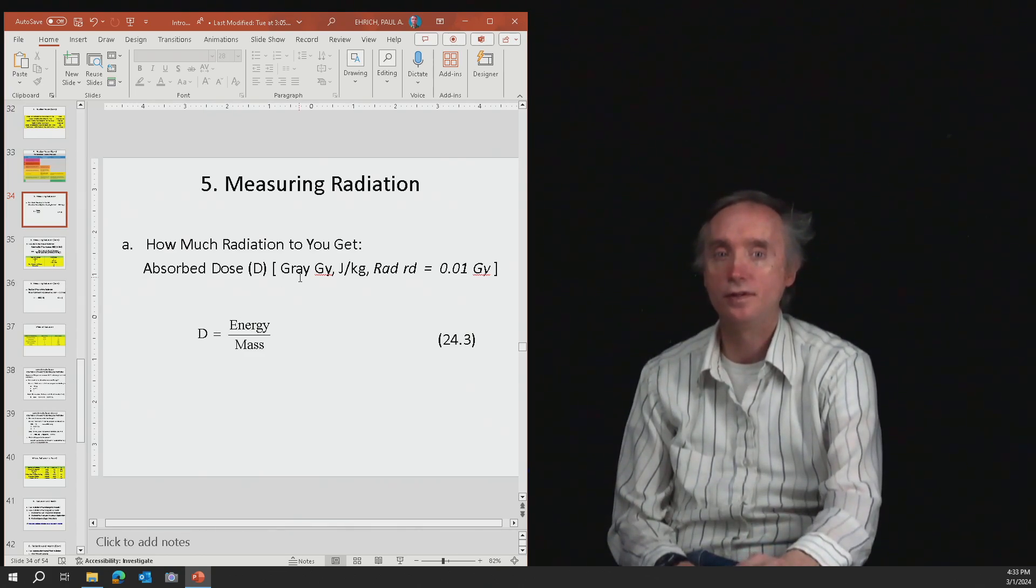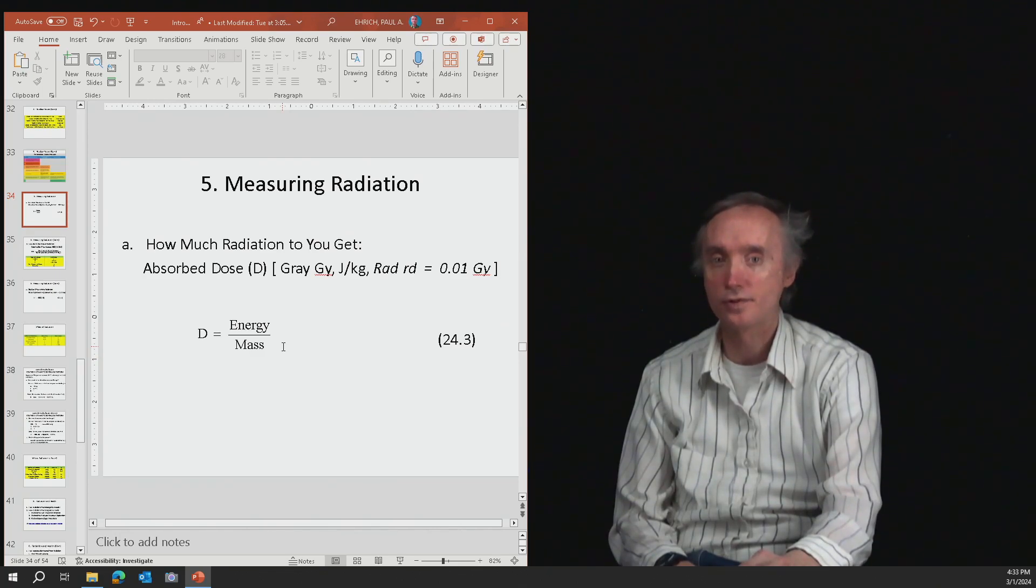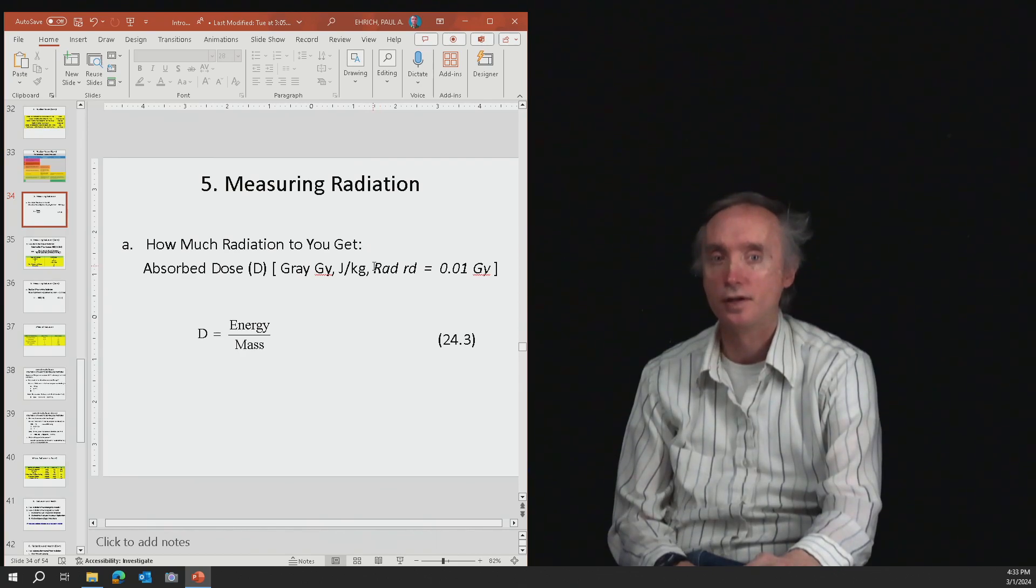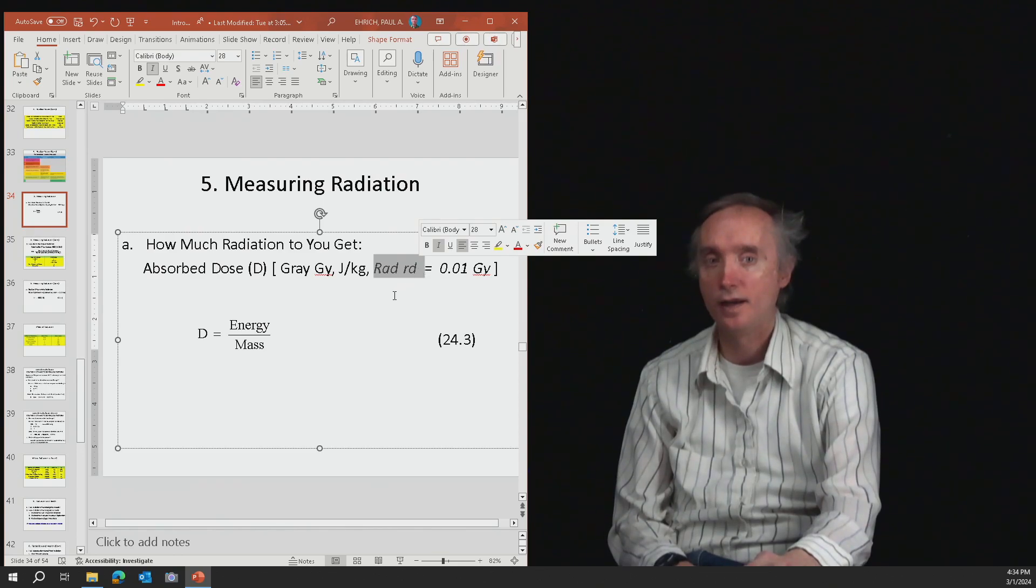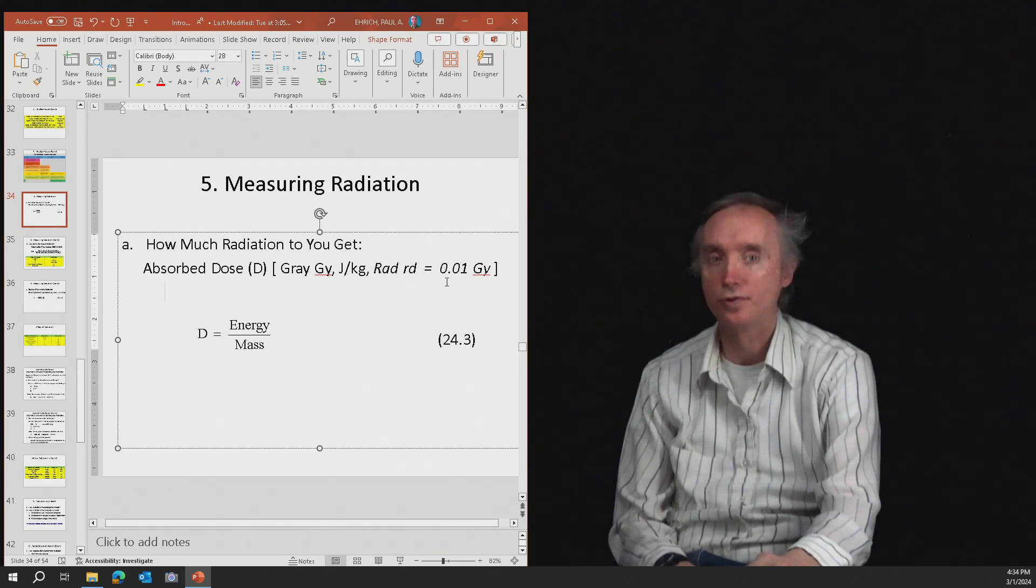Now let's look at the units. The official unit is going to be called the gray. Another name for a gray would be a joule per kilogram because energy is in joules, mass is in kilograms. But there's an older set of units. The older unit for dosage was called the rad, and a rad is equal to 0.01 grays.